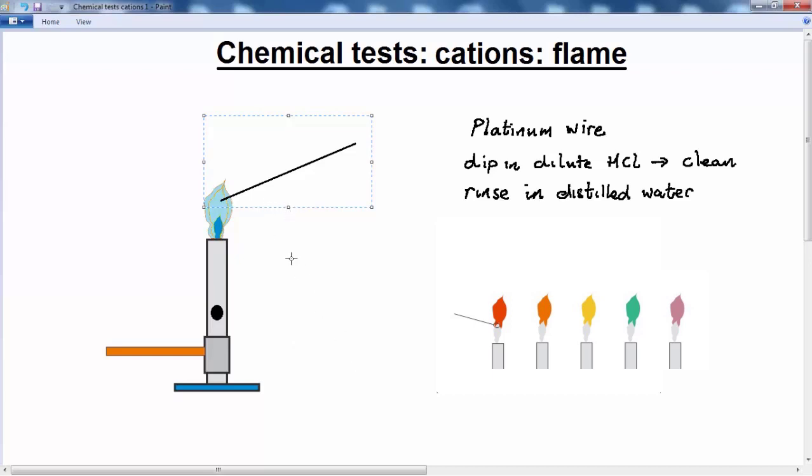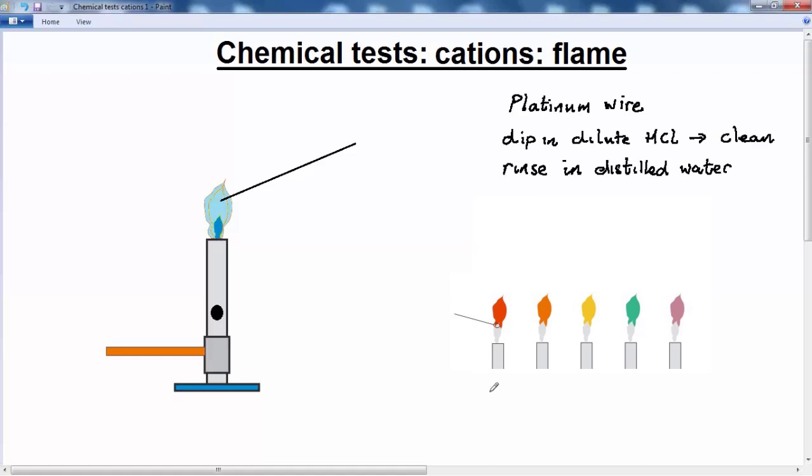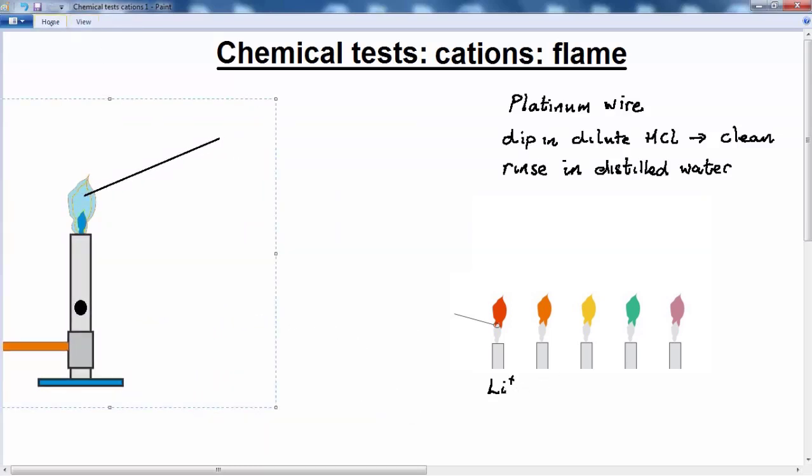In your IGCSE syllabus, you're required to remember the flame colors for five samples. When we describe these flames, it's important to remember the key color adjectives. For example, we've got lithium (Li+) and that flame's described as crimson red. Remember the crimson bit—crimson red.